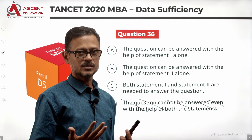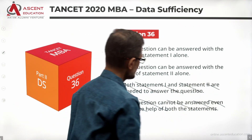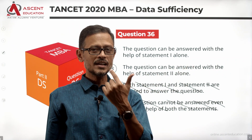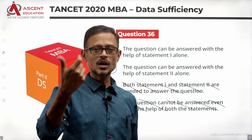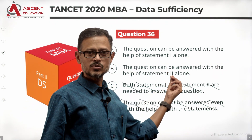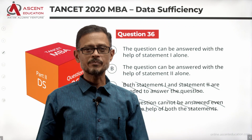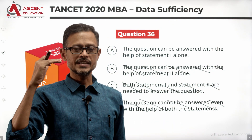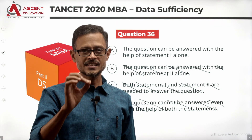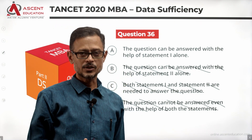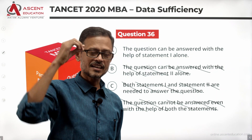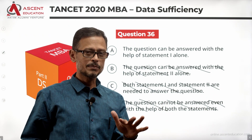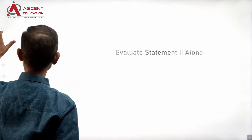Since statement 1 alone is sufficient, we can eliminate answer option D — the question cannot be answered — and we can also eliminate answer option C, since both statements combined are not needed. We can also eliminate answer option B, which says the question can be answered with statement 2 alone. Since statement 1 is sufficient, the answer option is A. You don't even have to evaluate statement 2 in the exam.